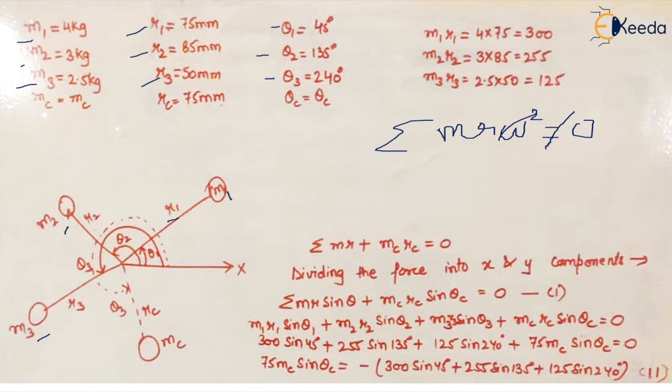To balance the system we have added a counter mass denoted by mc at some radial distance which is given in the equation, 75mm, and we have to find the angular position of this counter mass theta c. The equation becomes the resultant of all the forces should be equal to zero, that means summation of mr plus mc rc is equal to zero.